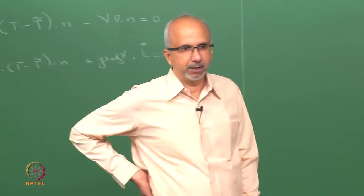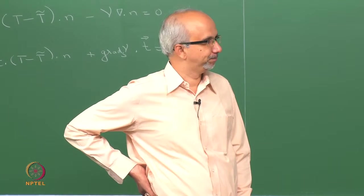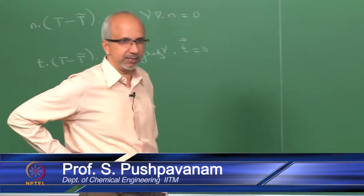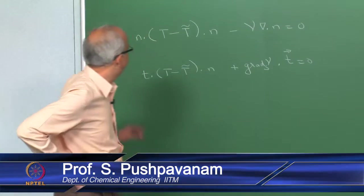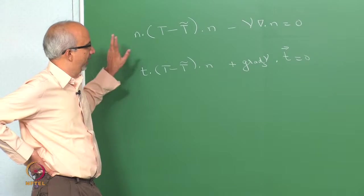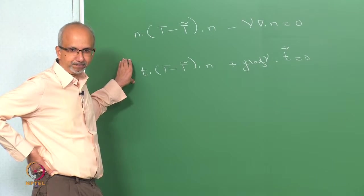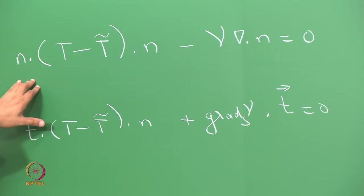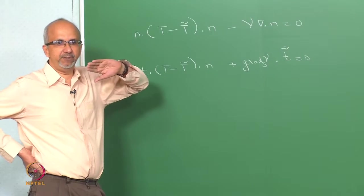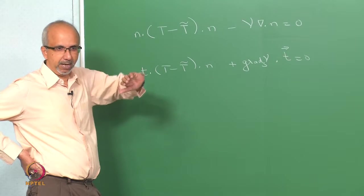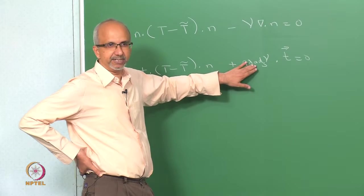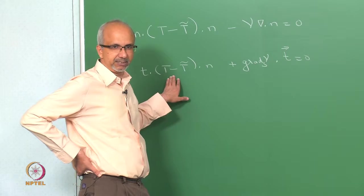Welcome to today's lecture. We will continue from where we left off. Towards the end of the last lecture, we had derived the normal stress boundary condition and the tangential stress boundary condition. We have taken into account the fact that you could have a surface tension variation along the interface, and there is a contribution of that surface tension variation in the tangential stress boundary condition.